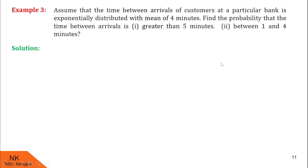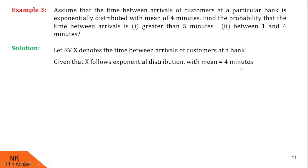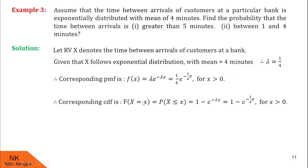Let random variable x denote the time between arrivals of customers at the bank. Given that x follows exponential distribution with mean = 4 minutes, therefore lambda = 1/4. The corresponding PDF is f(x) = (1/4) × e^(−(1/4)x). The CDF is F(x) = P(X ≤ x) = 1 − e^(−(1/4)x).